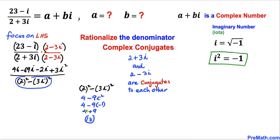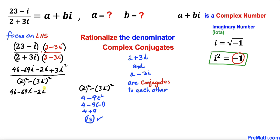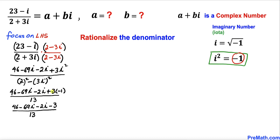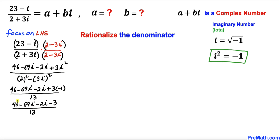Now let's focus on the numerator. Since i squared equals negative 1, we replace it, giving us 46 minus 69i minus 2i plus 3 times negative 1, divided by 13. That becomes 46 minus 3 combined, and negative 69i minus 2i combined, written as separate fractions over 13.